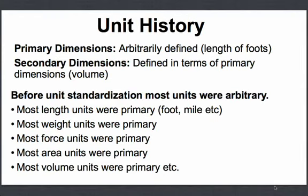It helps to have a little bit of unit history. Primary dimensions are dimensions that are arbitrarily defined — for instance, a length of foot or inch. Secondary dimensions are dimensions that are defined in terms of primary dimensions, such as volume. Before unit standardization, most units were arbitrary: most length units were primary (foot, mile, etc.), most weight units were primary, most force units were primary, most area units were primary, and most volume units were primary.